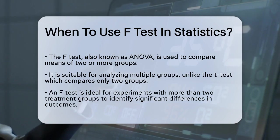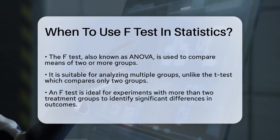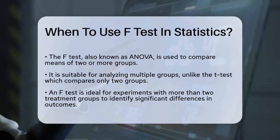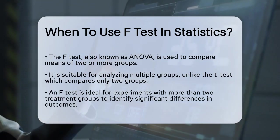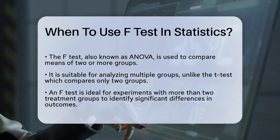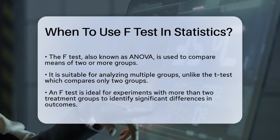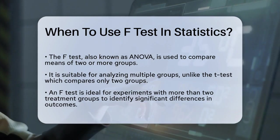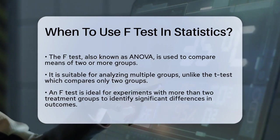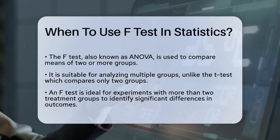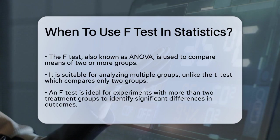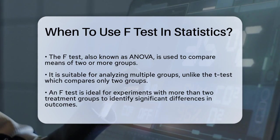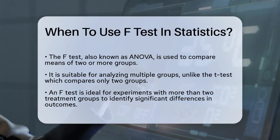First, an F-Test, also known as the Analysis of Variance test, is used when you're comparing the means of two or more groups. Unlike the T-Test, which is limited to comparing the means of just two groups, the F-Test can handle multiple groups and factors.